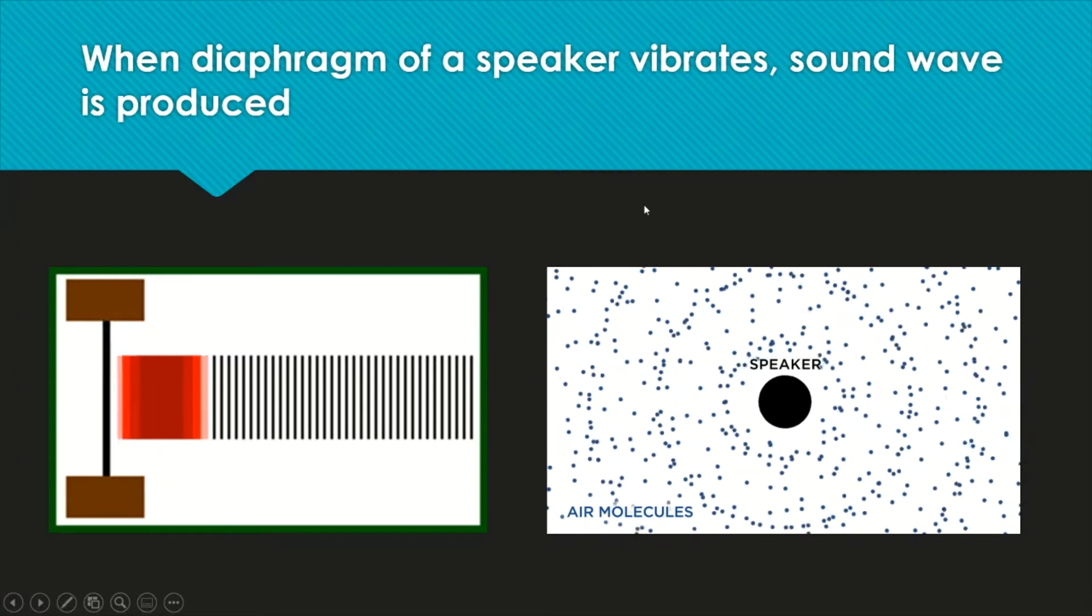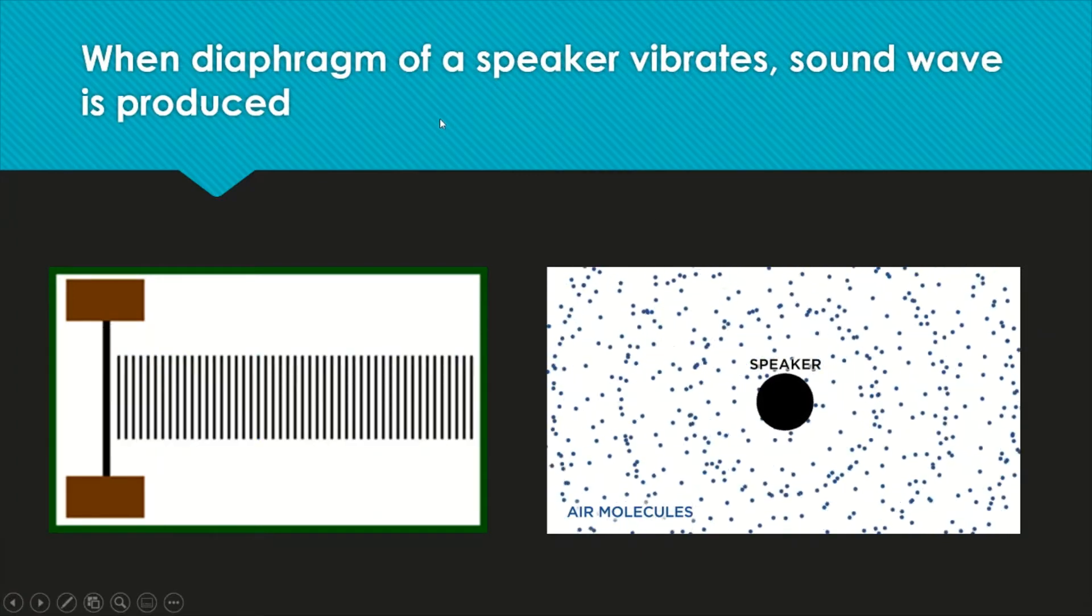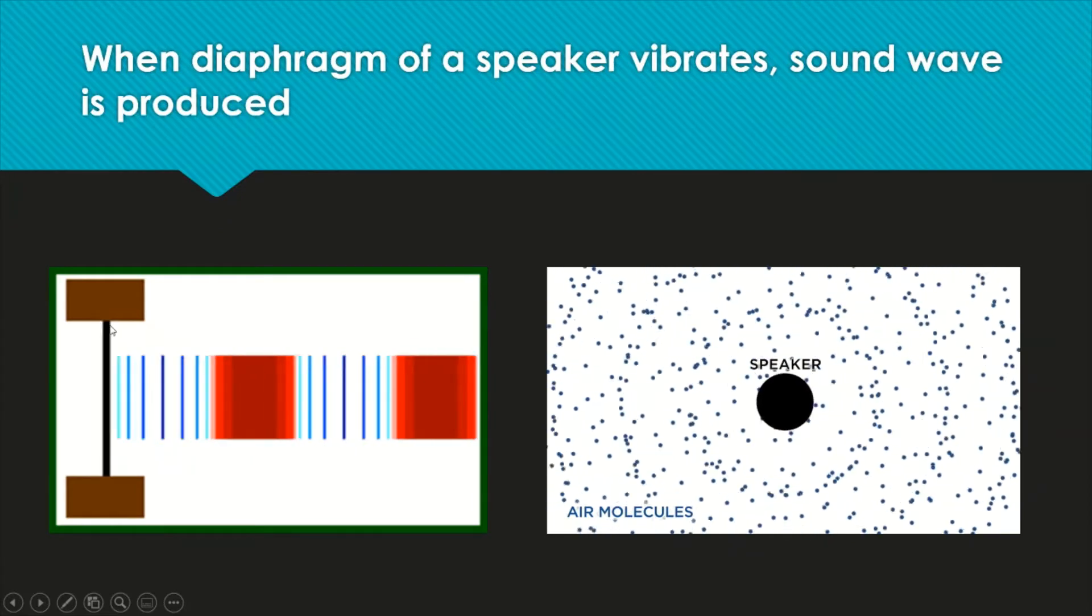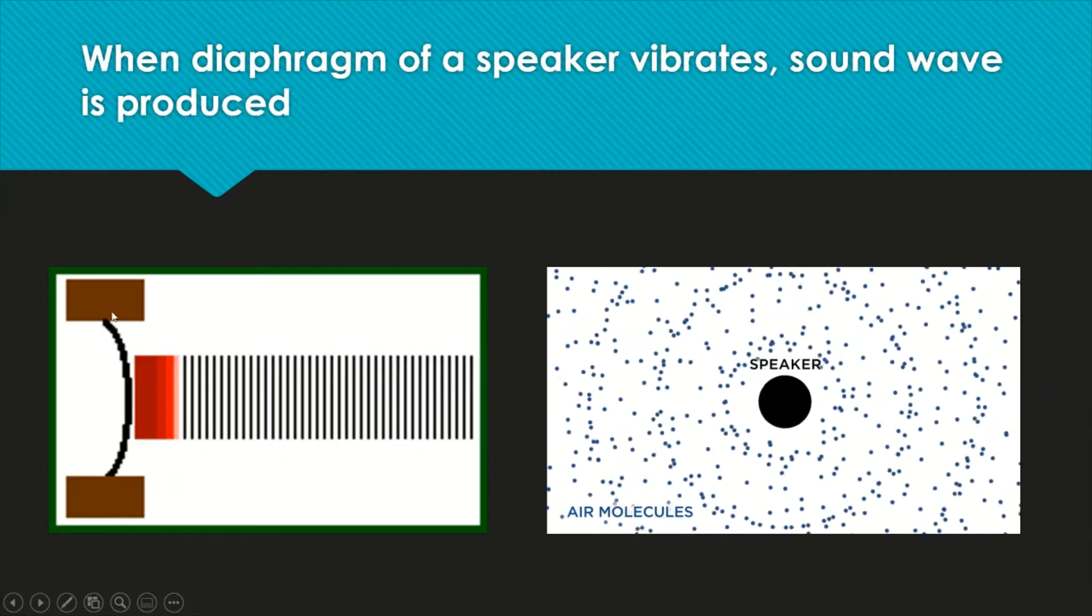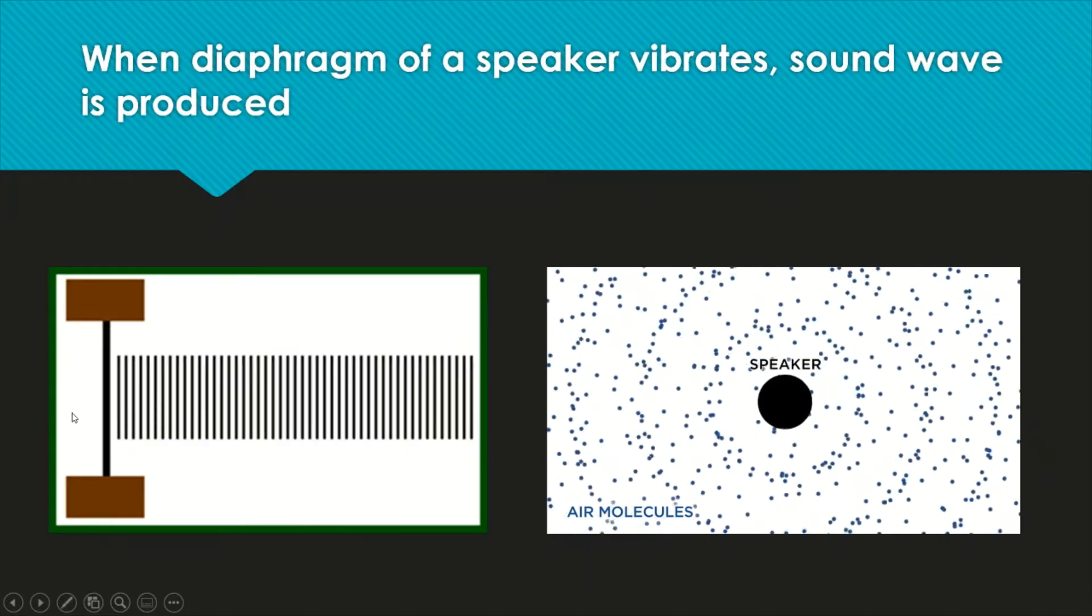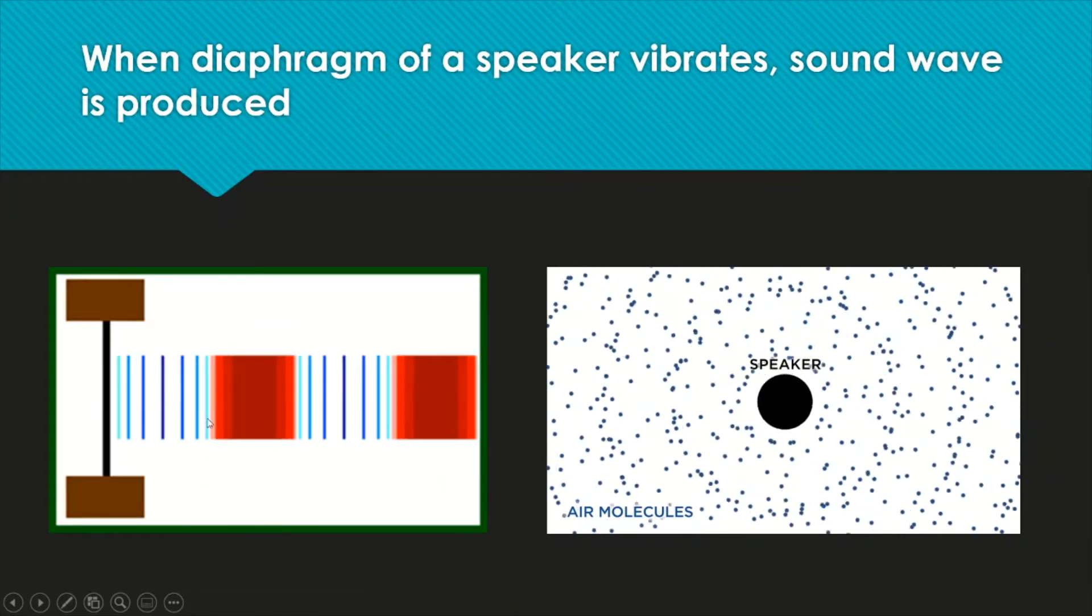Next, sound wave. How is sound wave produced? In a speaker, there is a diaphragm. When the diaphragm oscillates forward and backward, sound wave is produced.